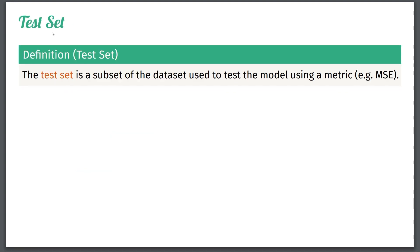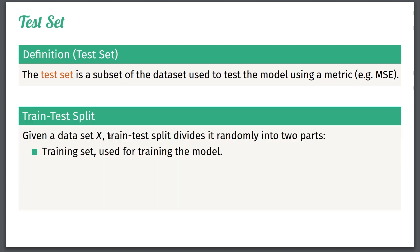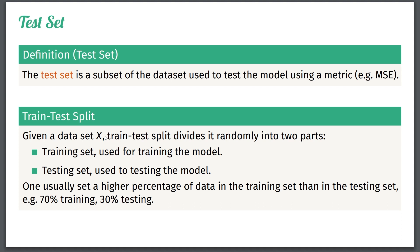The test set is defined as a subset of the dataset which we only use to test the model using a given metric — in our case, mean square error. We take the dataset and the targets and split them into two sets: one only used for training and one only used for testing. Usually we use a higher percentage for training — for instance 70% for training and 30% for testing.